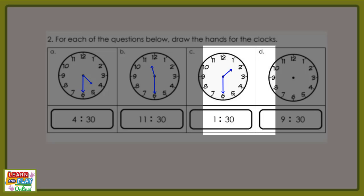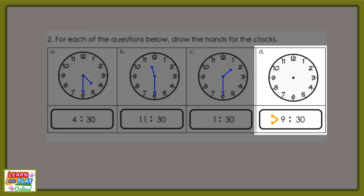Let's move on to question D. Read the digital time and draw the hands for the clock. This is what your clock should look like.